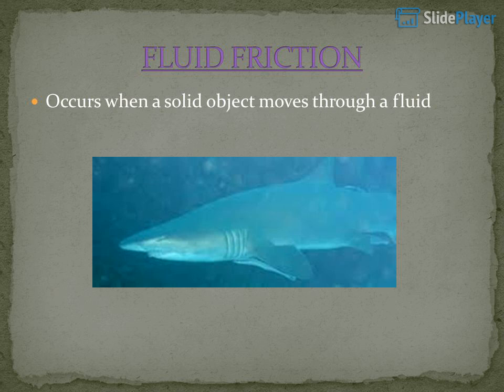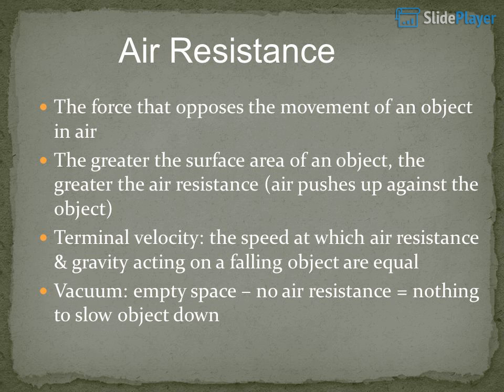Fluid friction occurs when a solid object moves through a fluid. Air resistance is the force that opposes the movement of an object in air. The greater the surface area of an object, the greater the air resistance — air pushes up against the object. Terminal velocity is the speed at which air resistance and gravity acting on a falling object are equal. A vacuum is empty space; with no air resistance, there is nothing to slow the object down.